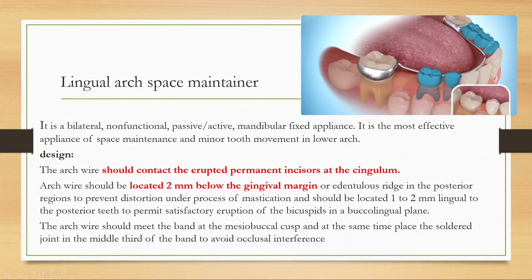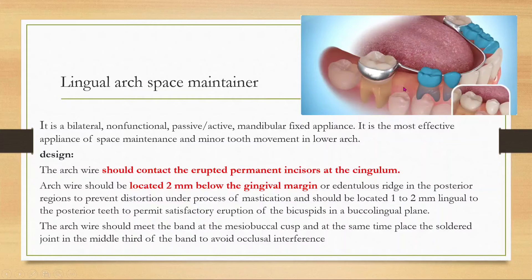The arch wire should contact the erupted permanent incisors at the cingulum and should be located 2 mm below the gingival margin. In the posterior region, it should be located 1 to 2 mm lingual to the posterior teeth to permit satisfactory eruption of the bicuspids without interference. The arch wire should meet the band at the mesiobuccal cusp, and the soldered joint should be placed at the middle third of the band to avoid occlusal interference.